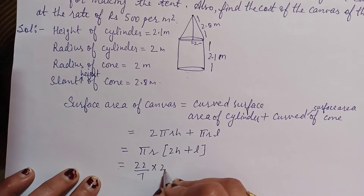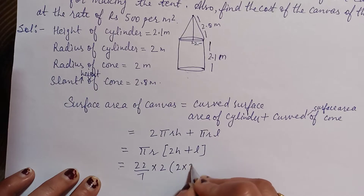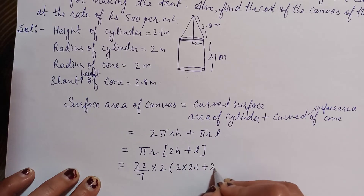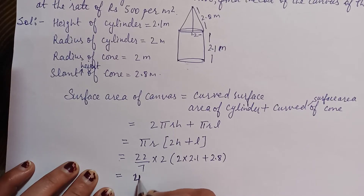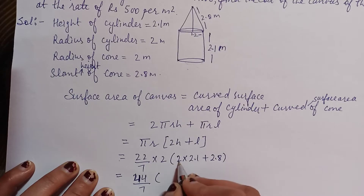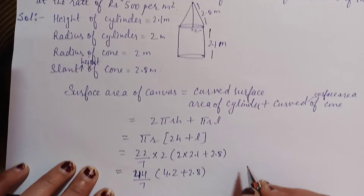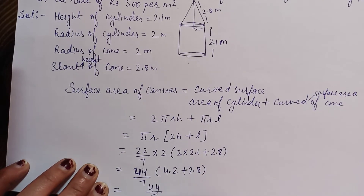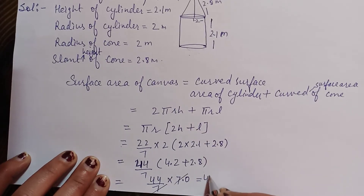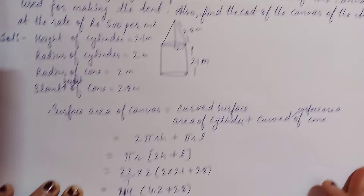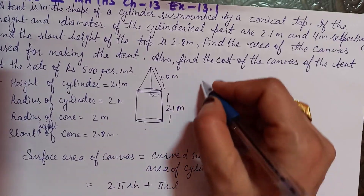r is 2, 2h is 2×2.1, and l is 2.8. So: 22/7 × 2 × (4.2 + 2.8) = 44/7 × 7 × (7.0) — the 7 cancels — giving 44 meter square.